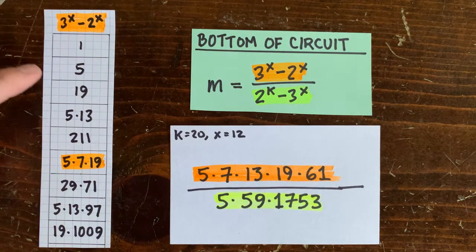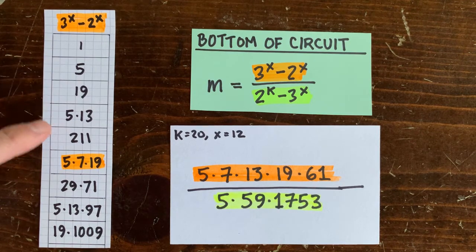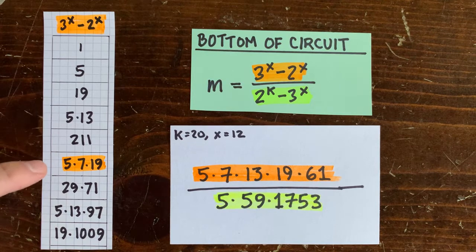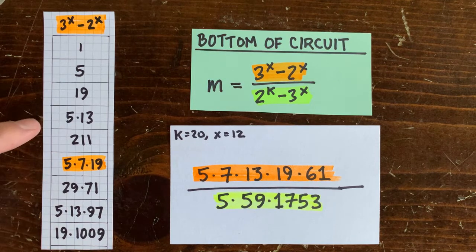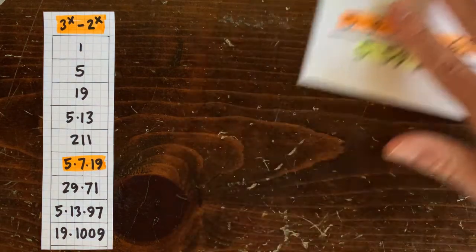We found that on every even x this expression is divisible by 5, and on every third x there's a factor of 19. On every fourth x there's a factor of 13, etc. So to look deeper, let's do some more clock math.